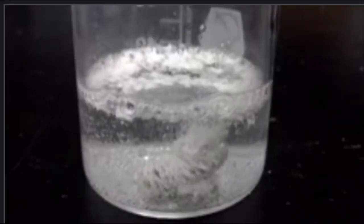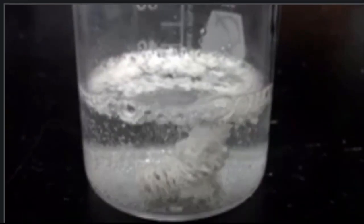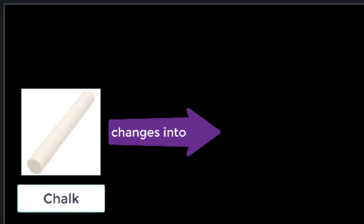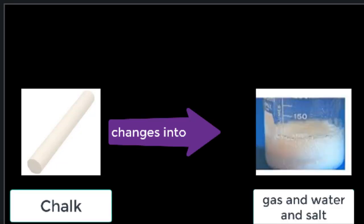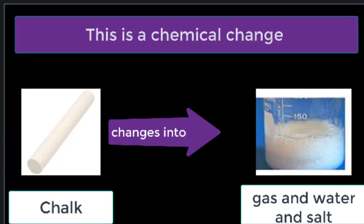But if we add this piece of chalk into a cup containing vinegar, bubbles will be produced along with salt and water. The bubbles produced means that there is releasing of gas. So in this case, chalk changes into gas and water and salt, new substances. This is what we call a chemical change.